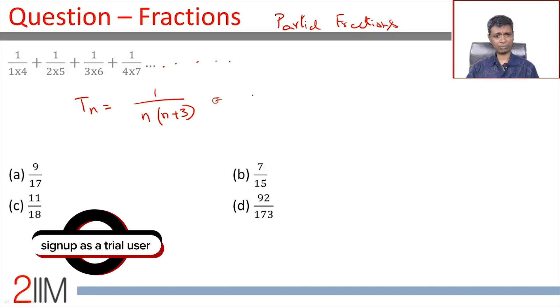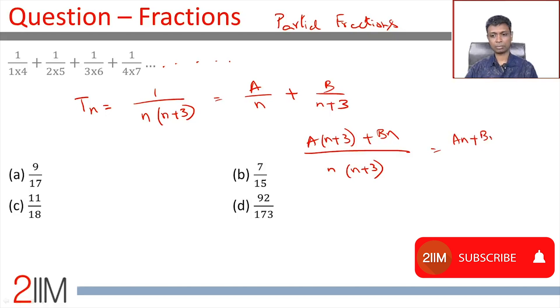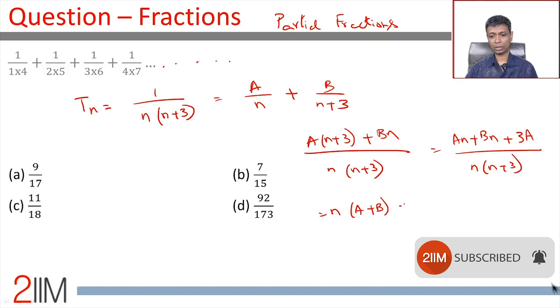Let us assume this can be broken into partial fractions. I'm going to say this can be written as A/n + B/(n+3). Then we'll solve for A and B. A/n + B/(n+3) equals (A(n+3) + Bn)/(n(n+3)), which is (n(A+B) + 3A)/(n(n+3)).